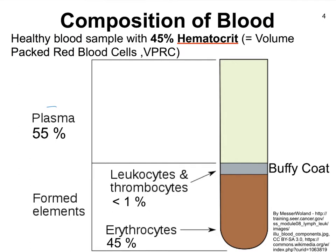Our blood is made up of plasma, a very watery fluid that makes up a little over half of the blood — about 55%. If we centrifuge a blood sample, the components separate by density. In a healthy individual, a bit over half is plasma, and the remainder — the formed elements — includes red blood cells, white blood cells, and platelets, also called thrombocytes particularly in animals.